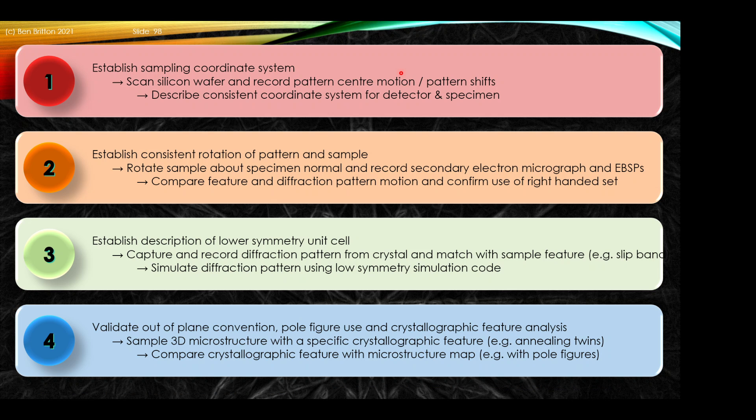There are some recommendations. We established the sampling coordinate systems with the silicon wafer. We described the consistent coordinate systems for the detector and specimen through rotation and beam scanning across the silicon. We established the consistent rotation to rotate the sample and compare the features and diffraction pattern motions. We established the description of the lower symmetry unit cell. We can capture and record diffraction patterns from the crystal and match a sample to a feature, such as the slip band. We can simulate the diffraction patterns for those lower symmetry simulation codes using the Python or MATLAB examples. We can validate those plane conventions, pole figure use, and crystallographic feature analysis by sampling a 3D microstructure with a specific crystallographic feature, such as the 111 annealing twin. We can compare that crystallographic feature with a microstructure map, such as pole figures. If you have low symmetry crystals, that could also be useful for this example.